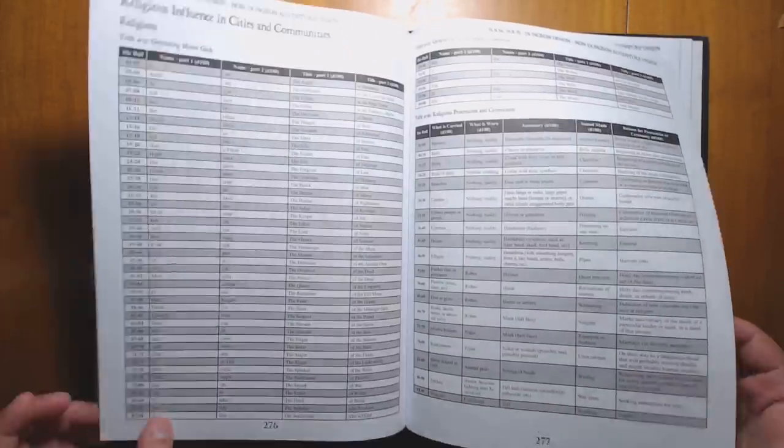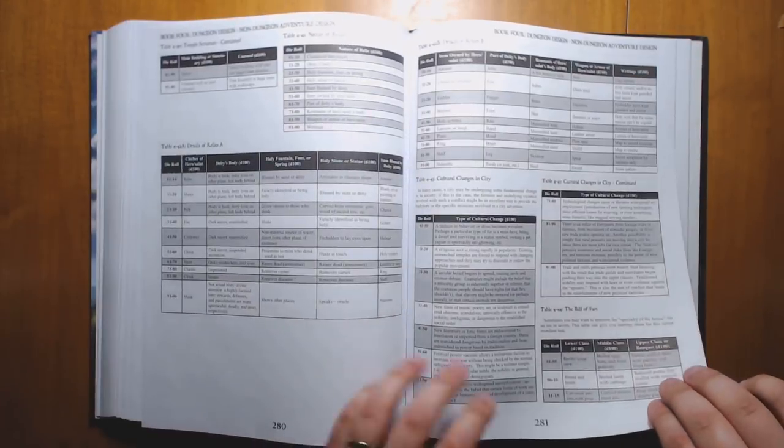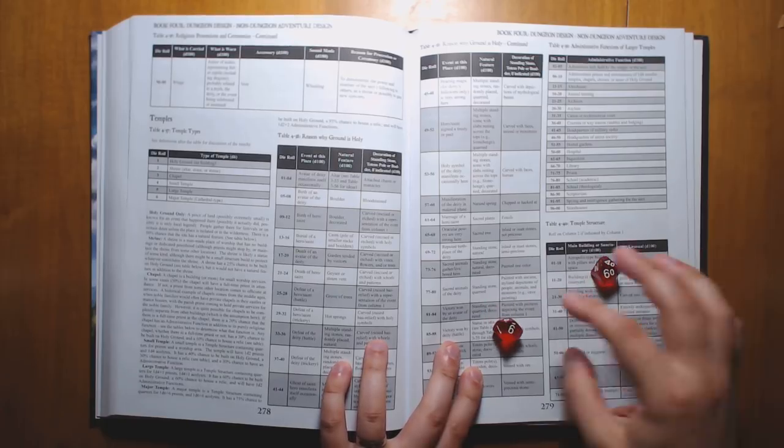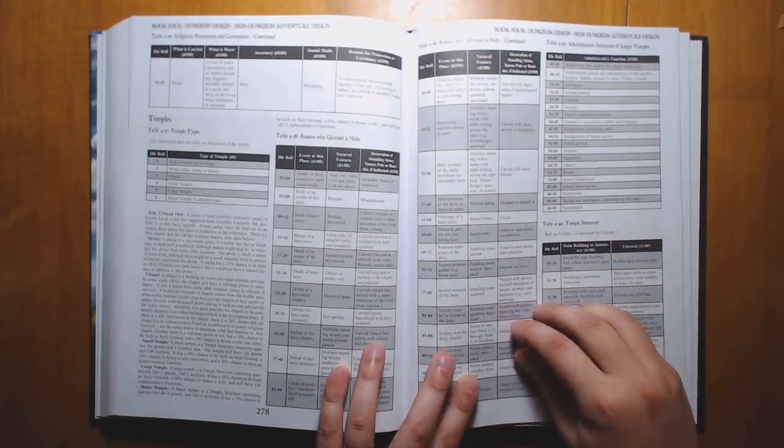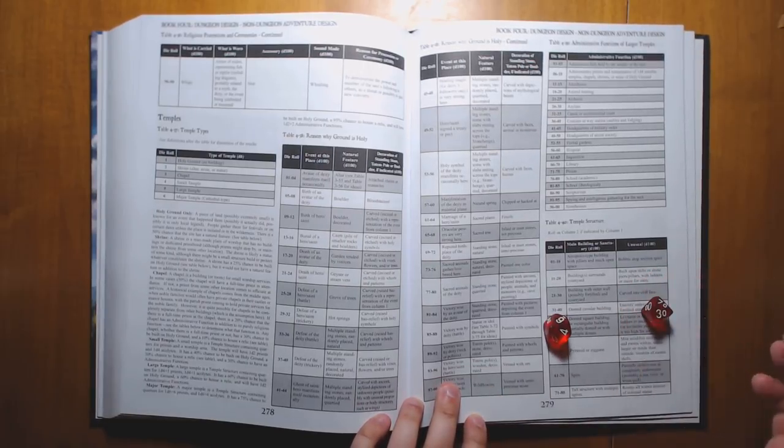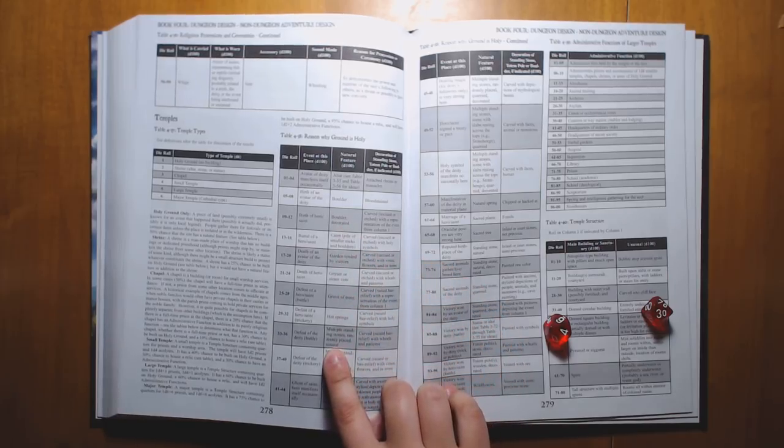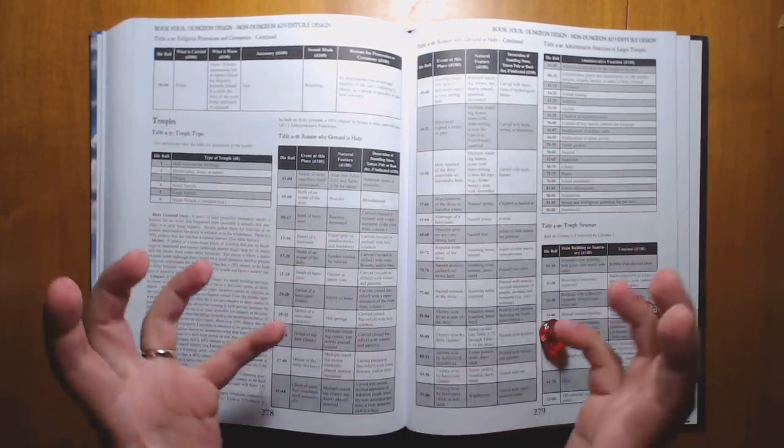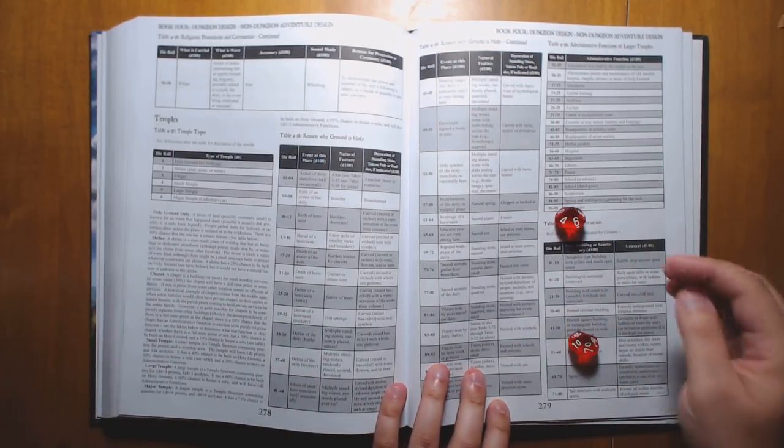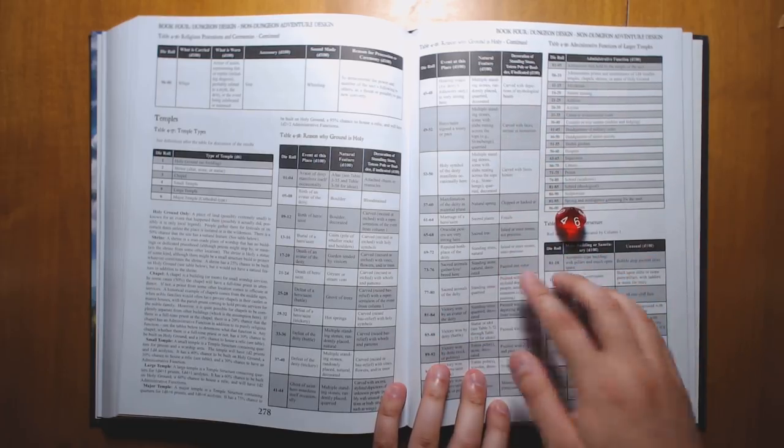Law and order, prisons, religious influences, reason why the ground is holy. That's great. Let's try one of these. We got 96, so a victory won by a hero or a saint. And 34, so multiple standing stones randomly placed natural. Maybe a ring of dolmens where a battle by a hero was fought. It's all painted one color.